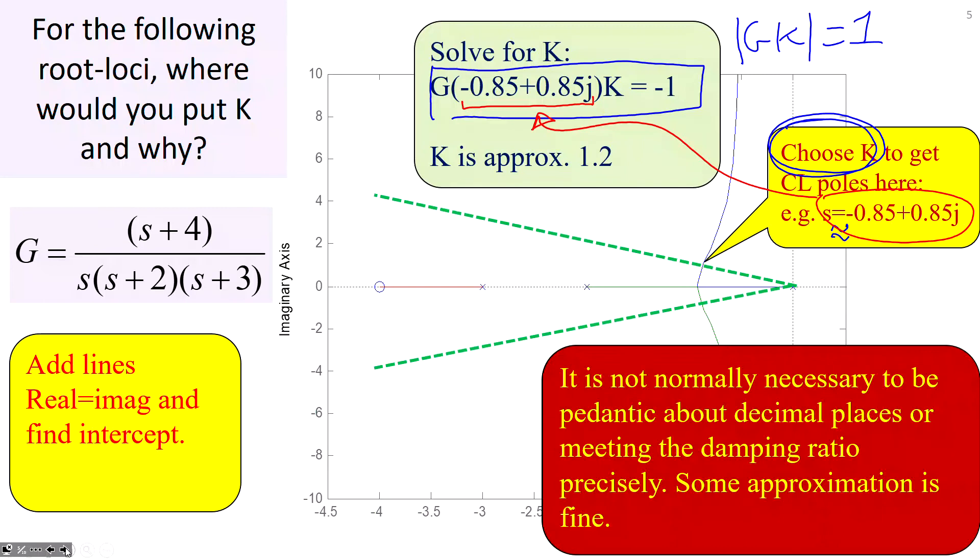Now, you'll see the other point here. It's not normally necessary to be pedantic about decimal places, because if you're slightly out, you can always change. But control is not usually that sensitive. Two significant figures is often enough.